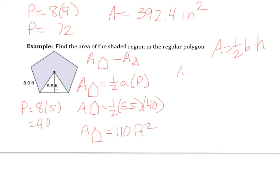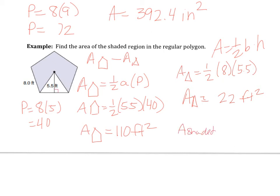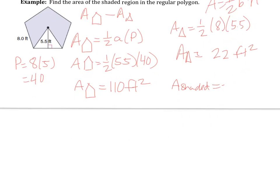The area of the triangle is one-half times the base, which is one of my sides — 8 — times the height, which is that perpendicular 5.5. So the area of the triangle equals 22 feet squared. My final answer for the area of the shaded region is 110 minus 22, so the area of the shaded region equals 88 feet squared.